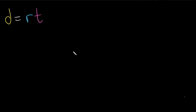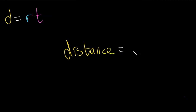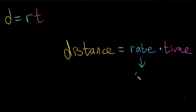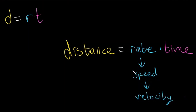d equals rt. This formula means distance is equal to rate times time. Your rate can be your speed, your velocity, or it can just be a rate.